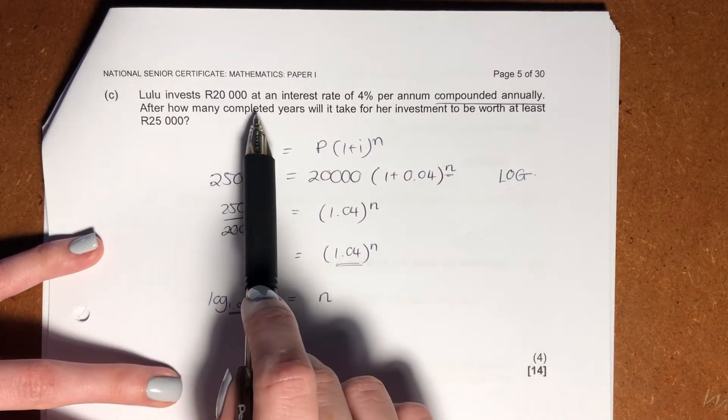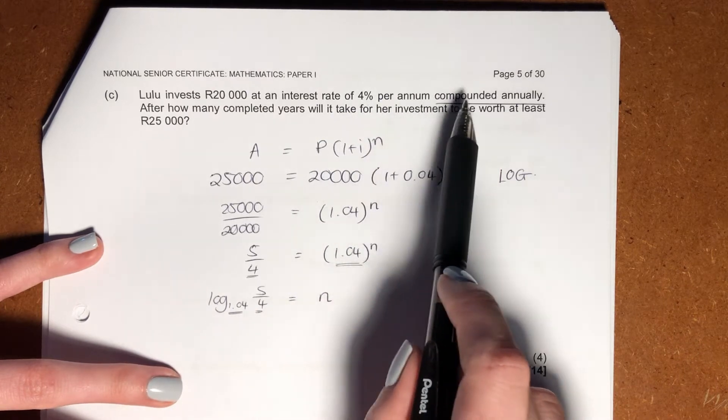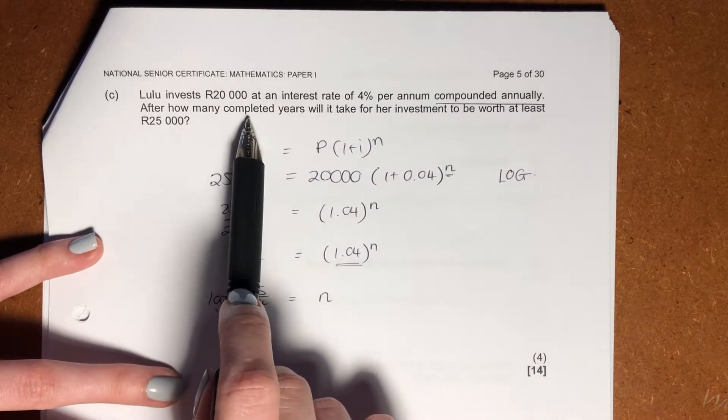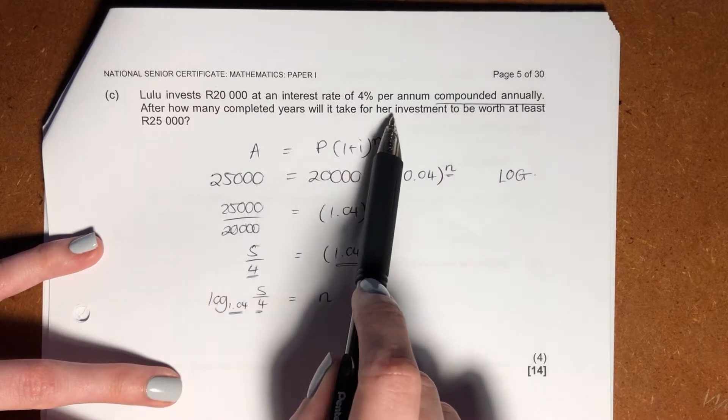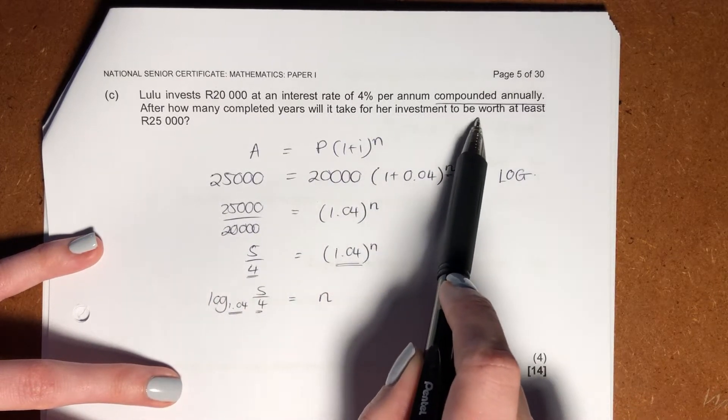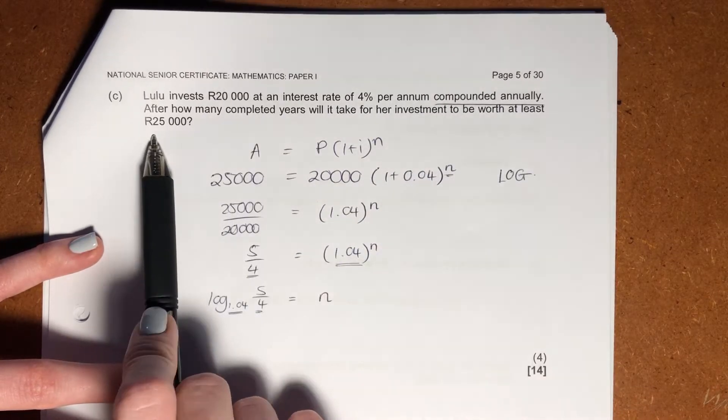So it says, Lulu invests 20,000 Rand at an interest rate of 4% per annum compounded annually. After how many completed years will it take for her investment to be worth at least 25,000 Rand?